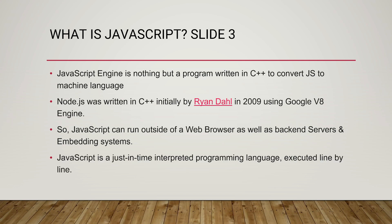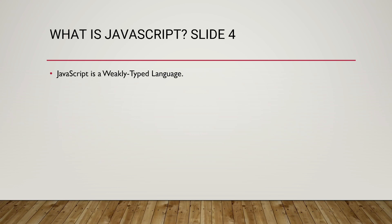JavaScript is a just-in-time, interpreted programming language executed line-by-line. JavaScript is also a weakly-typed language.